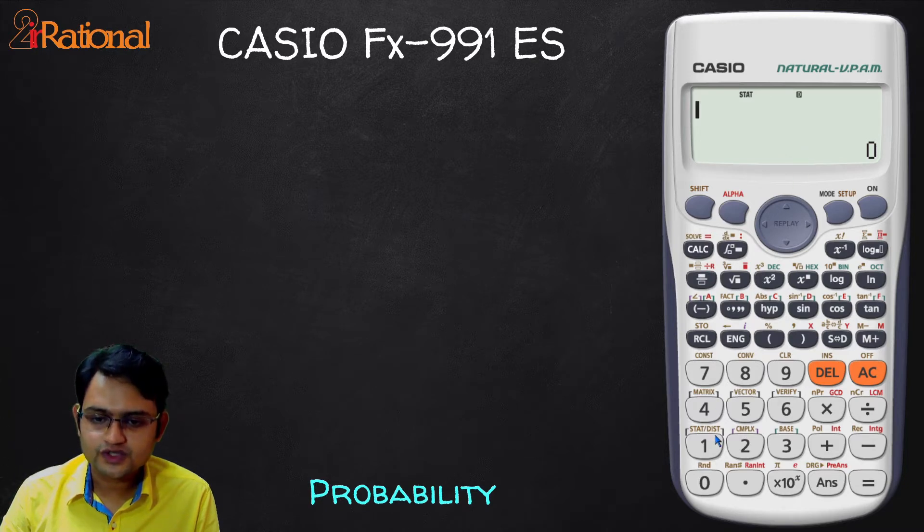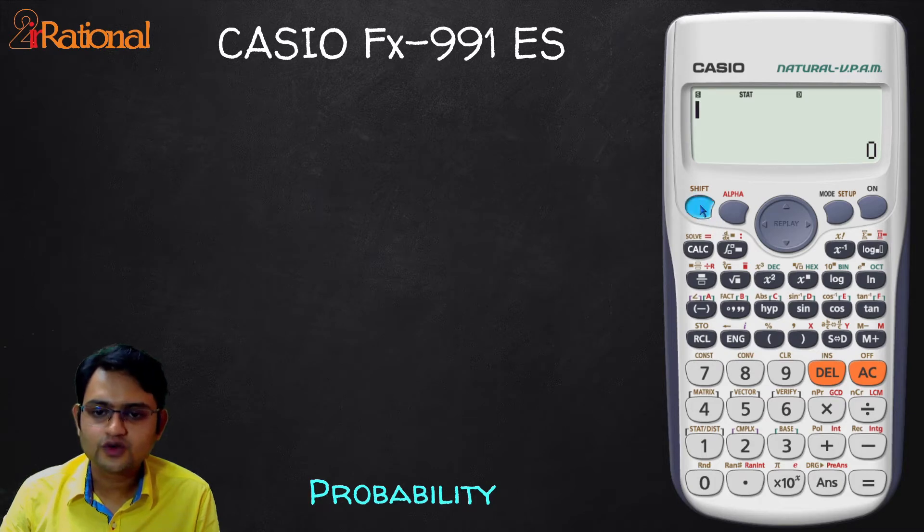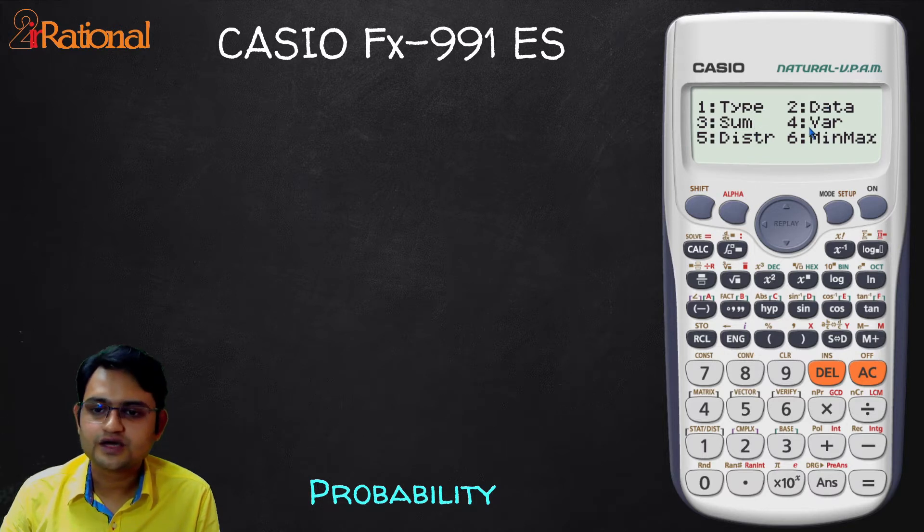And now when we are here in stat mode, the first thing we will do is go to this stat menu. For that we'll go to shift and press 1 and you can see it gives us a menu of type, data, sum, variance, distribution, minimum, maximum. We are going to go for distribution today. So, we'll press 5.